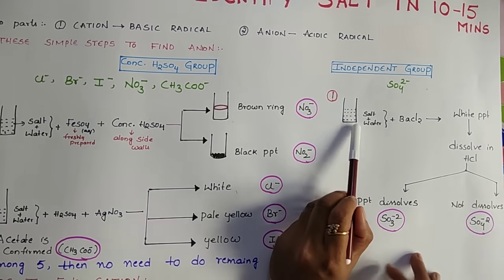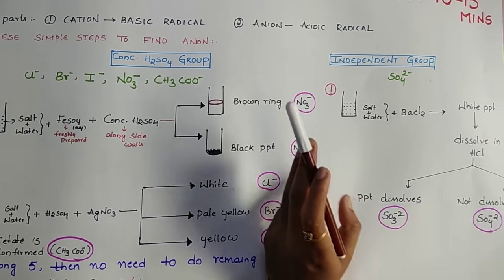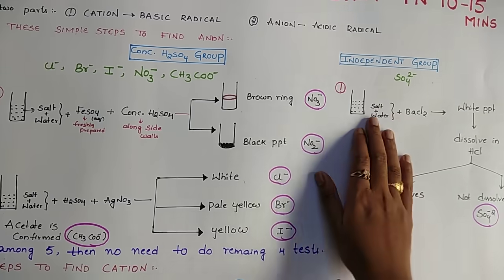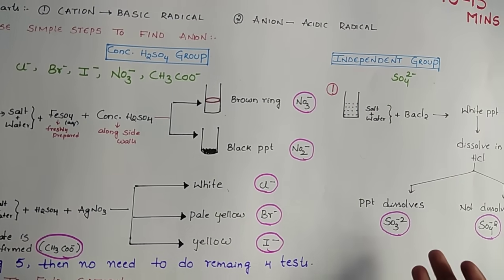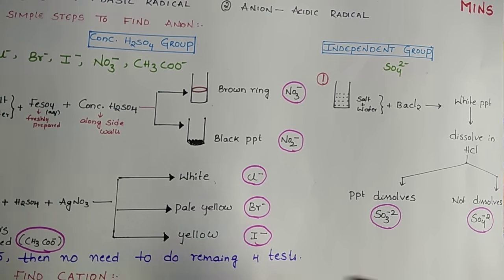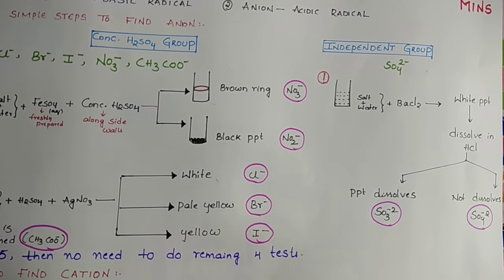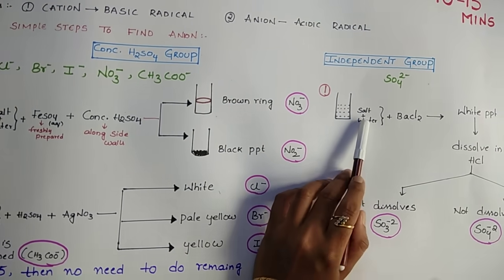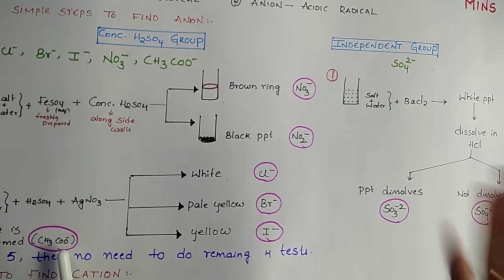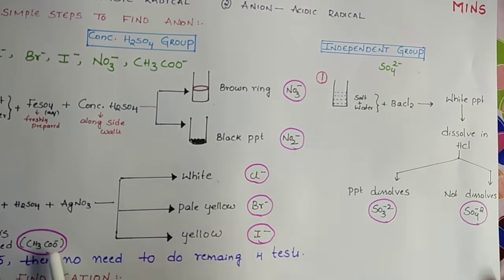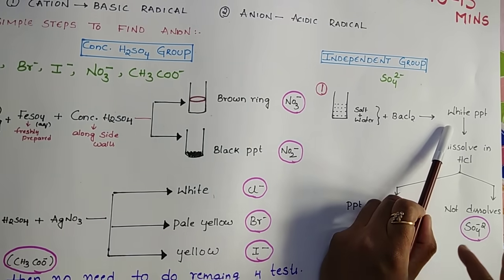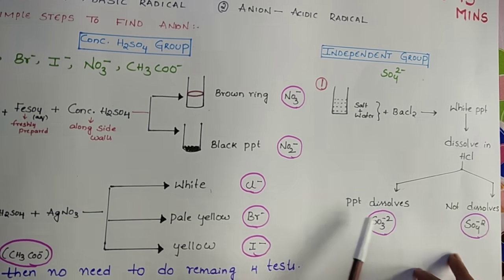Take one dry test tube and add a little bit of salt — keep in mind you have to take a very small amount. If you take less salt and add more water it will dissolve, but if you add more salt and less water students may feel it's not soluble. Always take less quantity of salt, add water — it will be soluble. To that add barium chloride solution, which is available in your laboratory. Once you add barium chloride solution you may get a white precipitate.